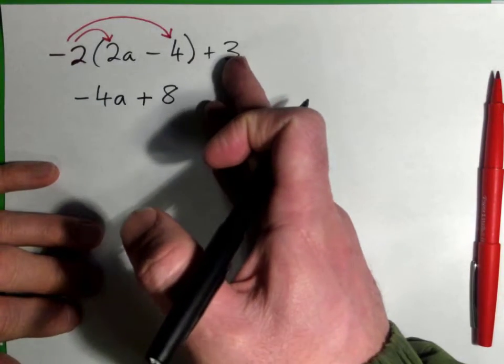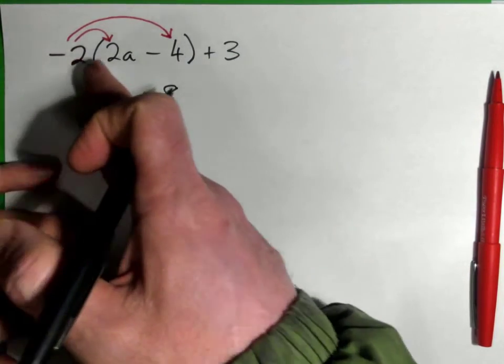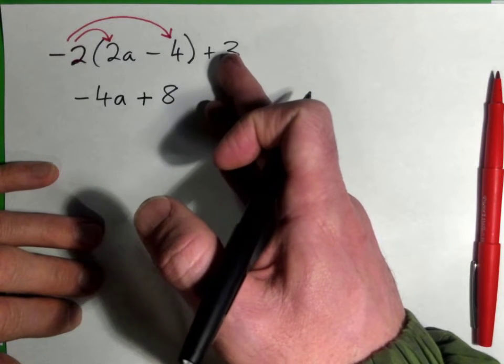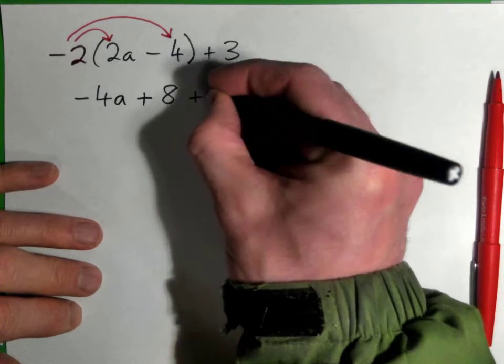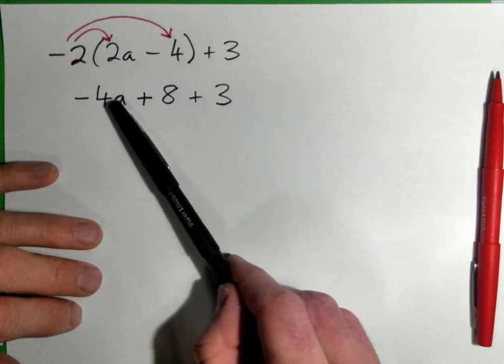Notice that the 3 was not affected by this multiplication because the 3 is not contained inside the parentheses. So that plus 3 just comes down, and we have negative 4a plus 8 plus 3. Now we need to add like terms.